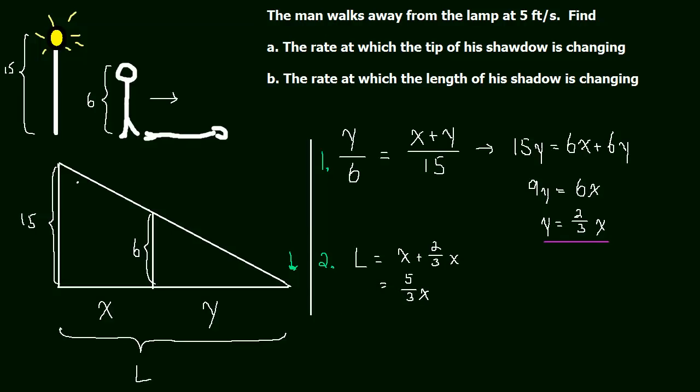And now dL dt, the derivative, so that'll be step three, taking the derivative. The rate at which L changes is equal to five-thirds times the rate at which x changes dx dt. And we already know that dx dt changes at five feet per second. So this is just five-thirds times five, which is equal to twenty-five-thirds. Twenty-five-thirds feet per second.